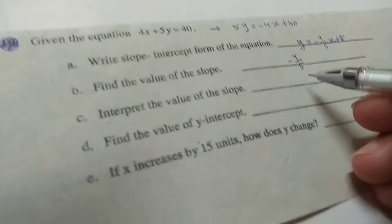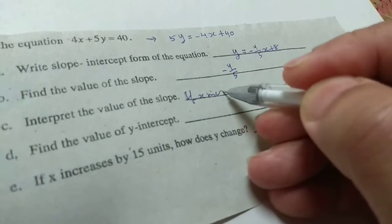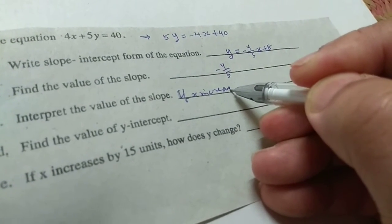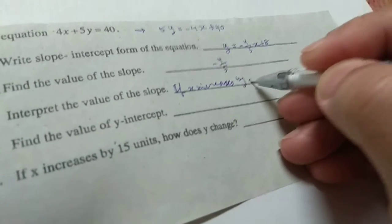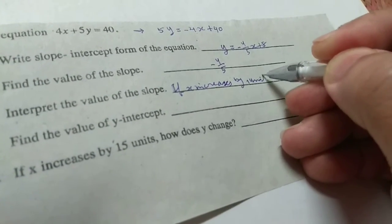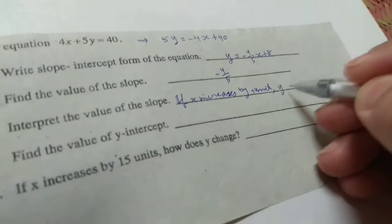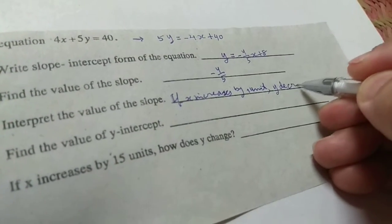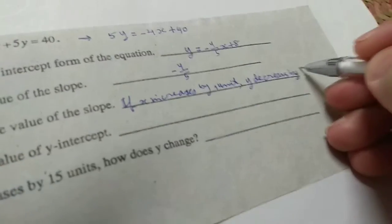Interpret the value of slope. So if x increases by 1 unit, if x increases by 1 unit, y decreases by 4/5 units.